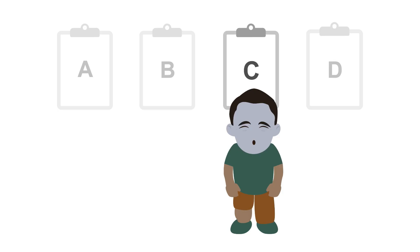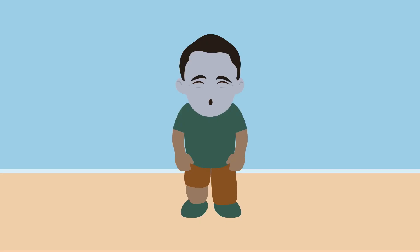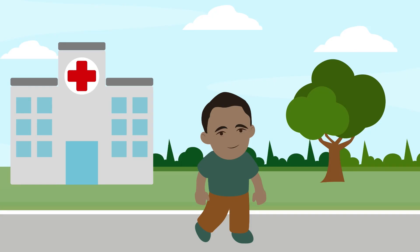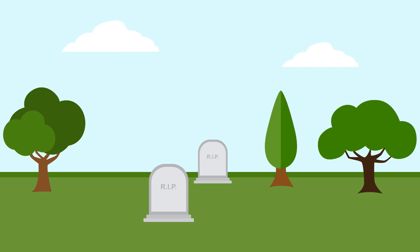Stage C patients are symptomatic and have structural abnormalities of the heart. The treatment goals for patients are to reduce symptoms, decrease hospitalizations, and reduce mortality.